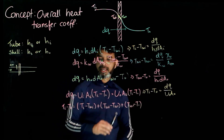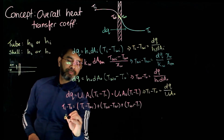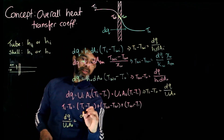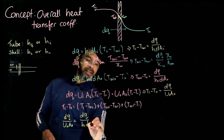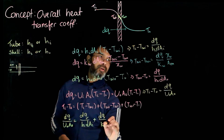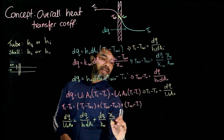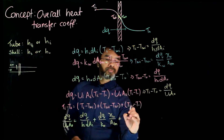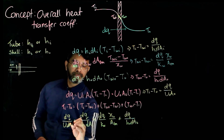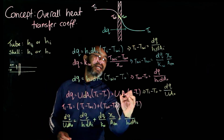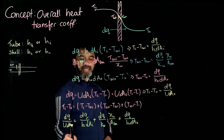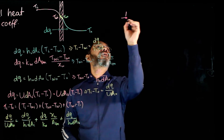Plugging all these expressions in, dQ over (U_O times A_O) will equal dQ over (H_I times dA_I) plus dQ over (K_W divided by X_W times A_log_mean) plus dQ over (H_O times dA_O). Since we are considering the small area, all terms should be dA_O. If you have the dQ term in all of those and multiply everything by dA_O, you end up getting 1 over U_O.